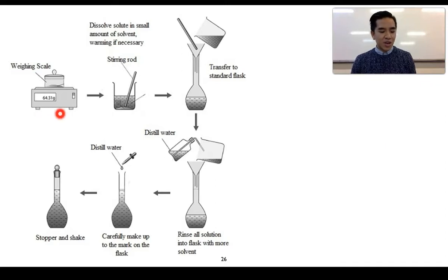Firstly, we take our primary standard and we measure out a particular mass of it. The next step is we then transfer that into a beaker. We dissolve this in a small amount of our solvent which would be distilled water. Give it a stir just to ensure that it completely dissolves.